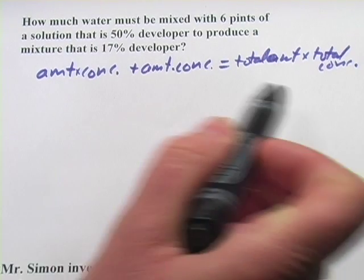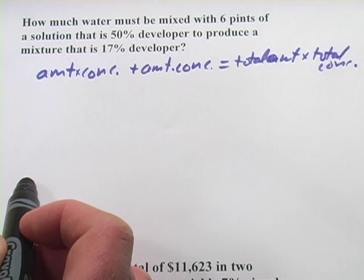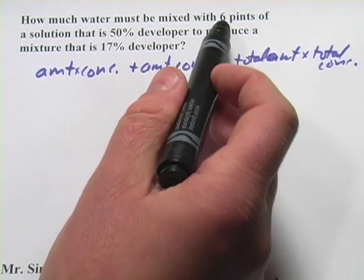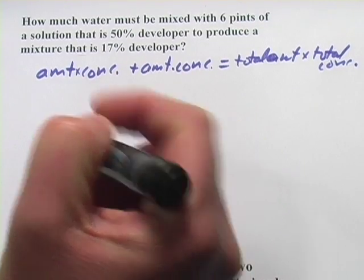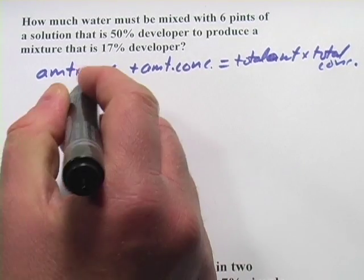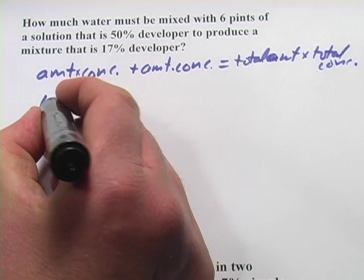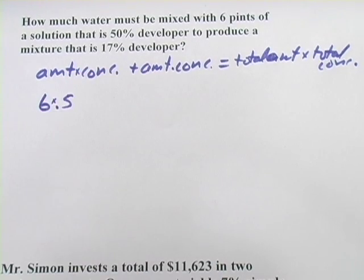So whatever you can fit into that form and then solve for, that's the way to approach this. Now, what we have here to start with is six pints at a 50% concentration. So the amount is six, the concentration is 50%, but we'll convert that to a decimal, so 0.5, six times 0.5.